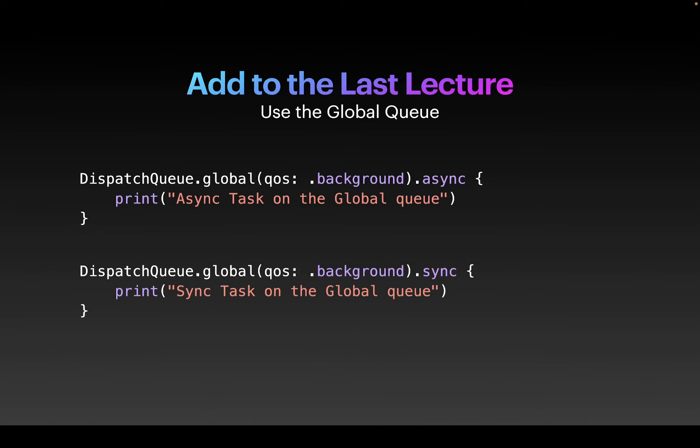The more generic way to access the global queue is to simply access the global instance on the DispatchQueue class. You can specify the quality of service — like background, userInitiated, userInteractive, default, or utility. It's a concurrent queue just like other concurrent queues you've seen before, so you have async and sync — you can choose whatever behavior you want.